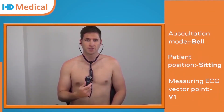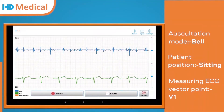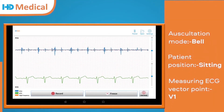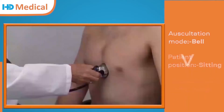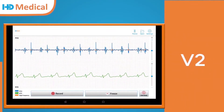Now I am measuring the ECG vector points, V1 to V6. This is the auscultation waveform for V1. ECG vector point V2. V2 waveform.